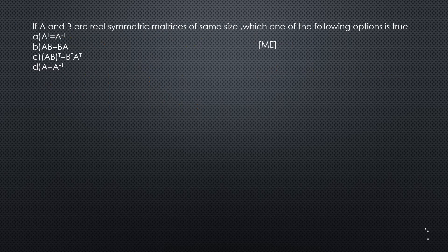If A and B are real symmetric matrices of the same size, which option is true? Option 1: A transpose equals A inverse — this is not true for all real symmetric matrices; it holds for orthogonal matrices. Option 2: AB equals BA — matrix multiplication does not follow the commutative property, so this is also not true.